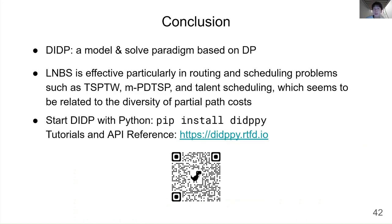In summary, this paper is about DIDP, a new modeling paradigm for combinatorial optimization. We propose Large Neighborhood Beam Search, LNBS, which combines Large Neighborhood Search and Beam Search. LNBS outperforms CABS in routing and scheduling problems. However, the performance of LNBS seems to be related to the diversity of partial path costs. You can easily start using DIDP with Python — install our library with pip install didppy. On the website, we have tutorials and an API reference. If you are interested, please use DIDP. Thank you for listening.